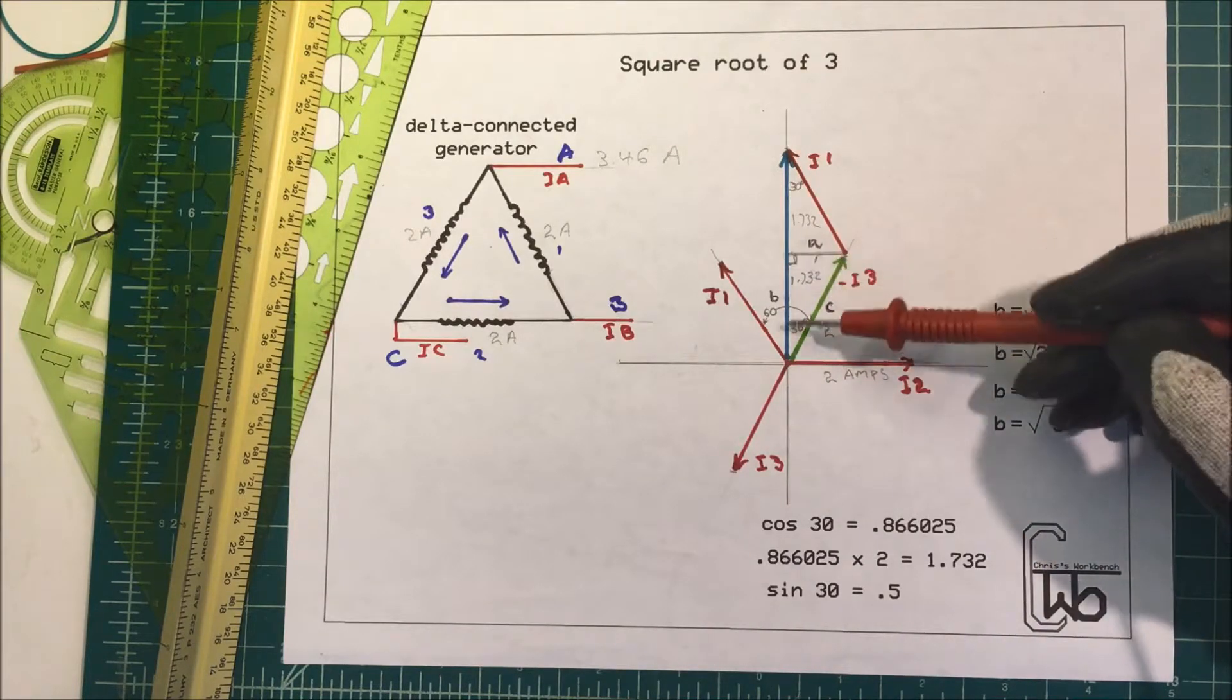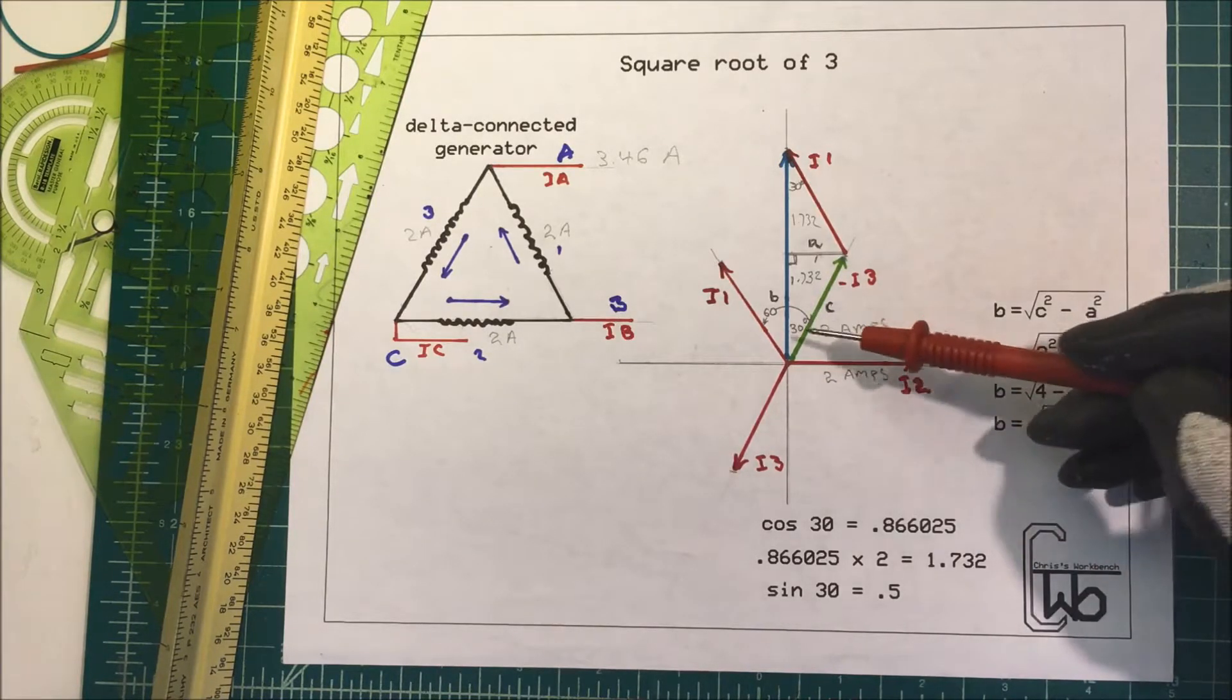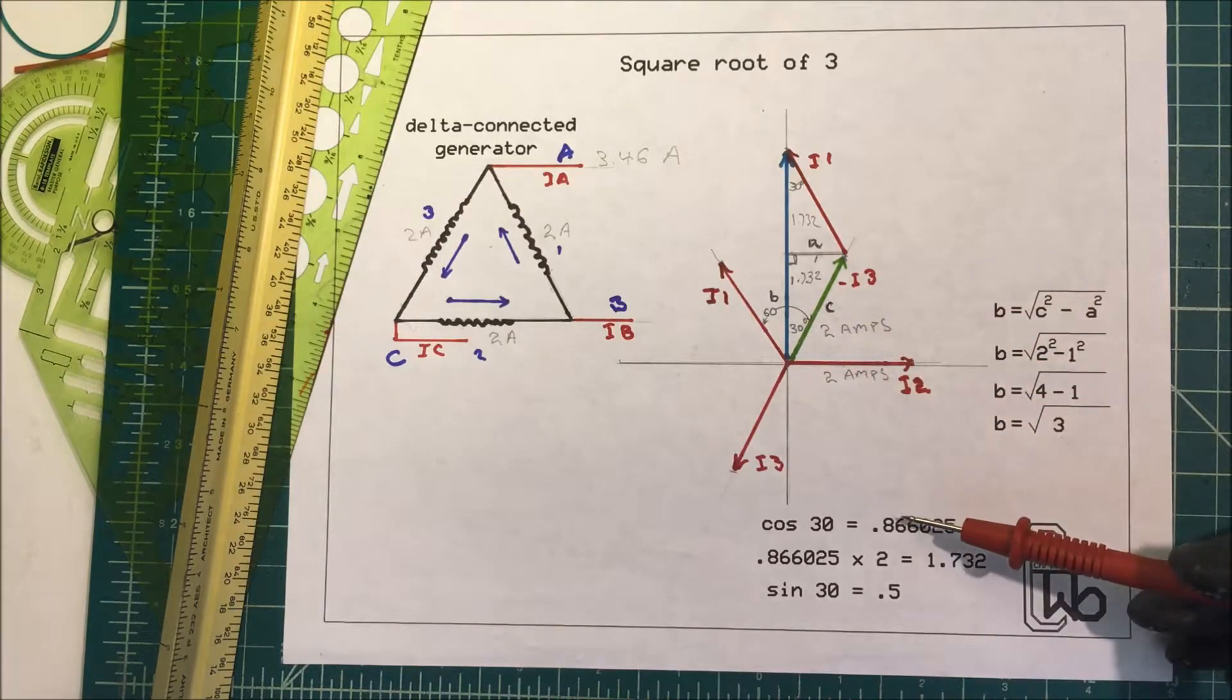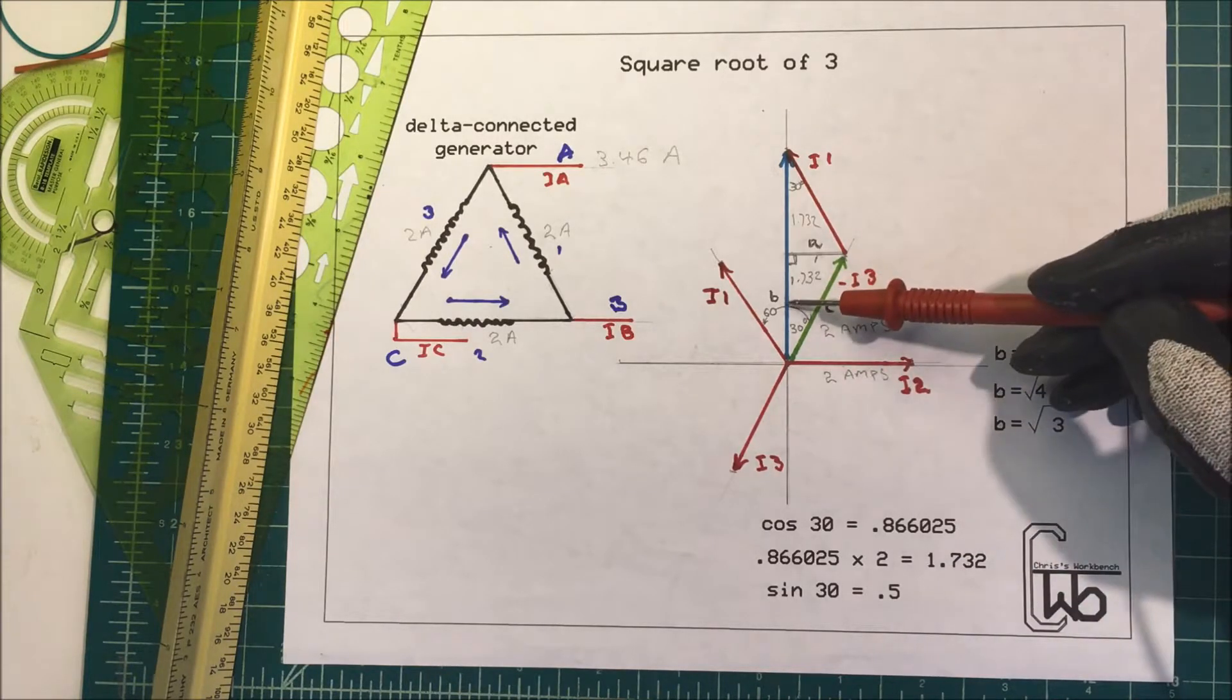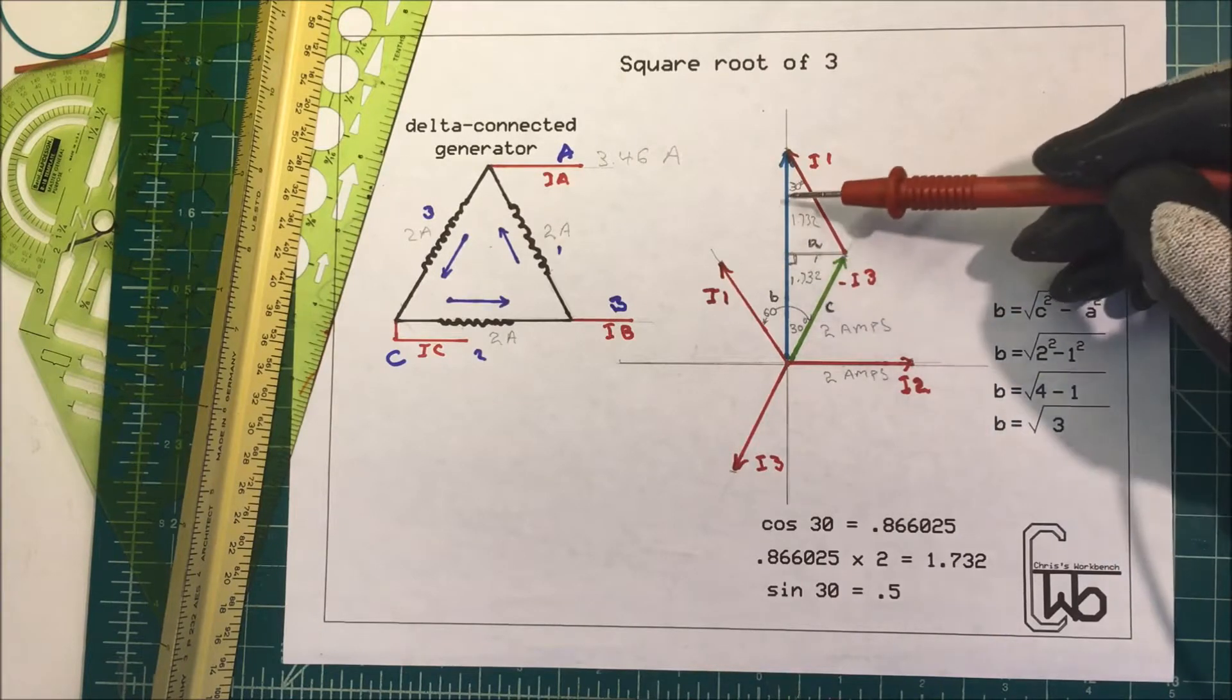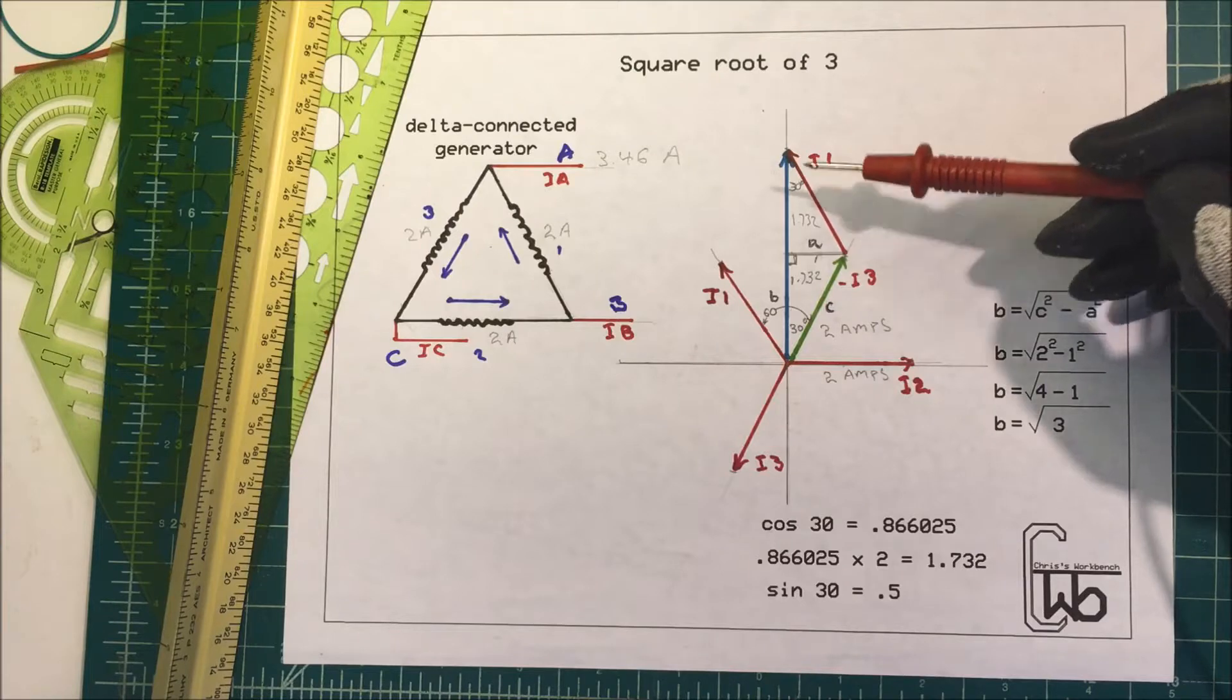We can determine that with trig also. We can take the cosine of this 30 degree angle times the hypotenuse. The cosine of 30 degrees is 0.866025 times two, that's going to be 1.732, the square root of three. So this is square root of three, this is going to be the square root of three in this triangle also.